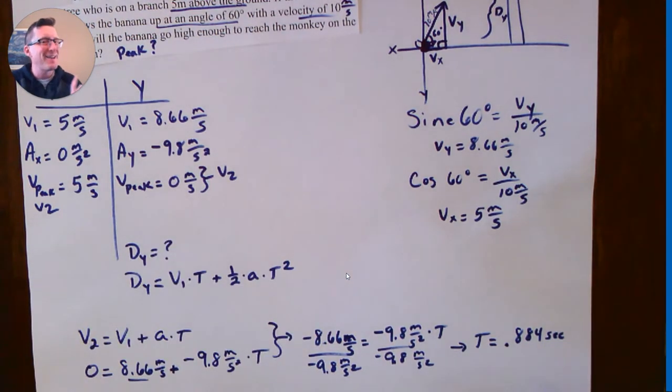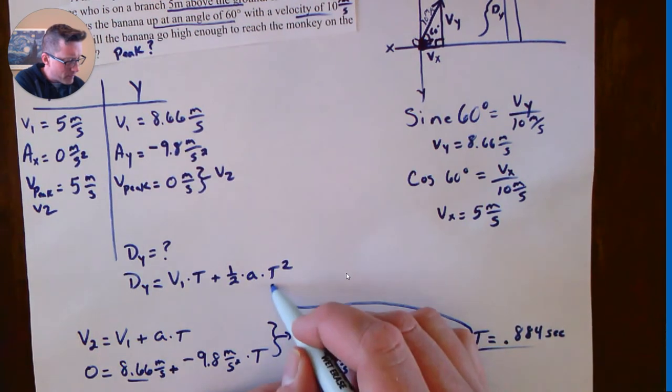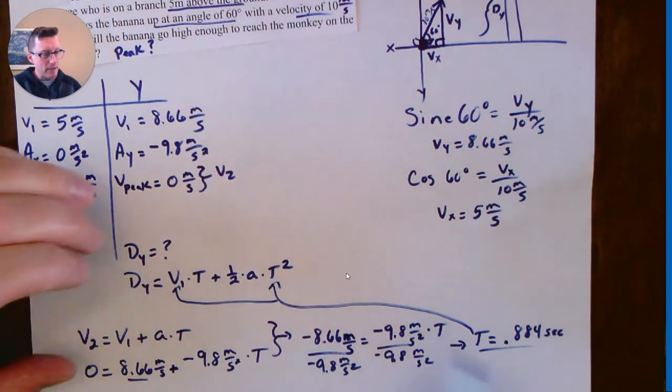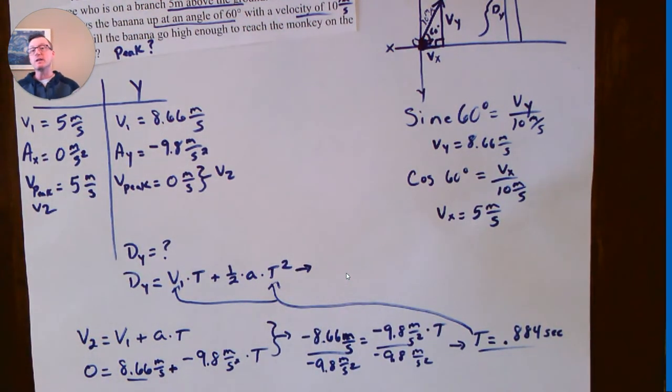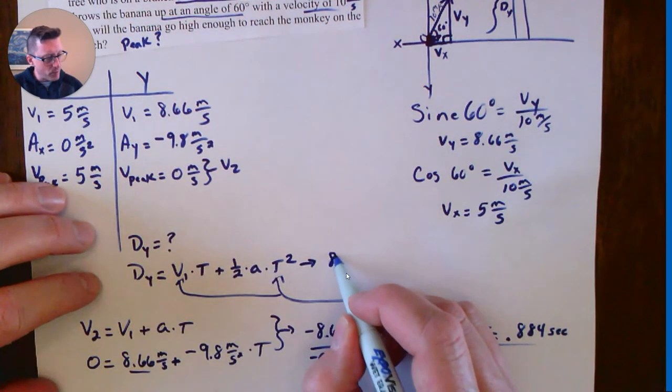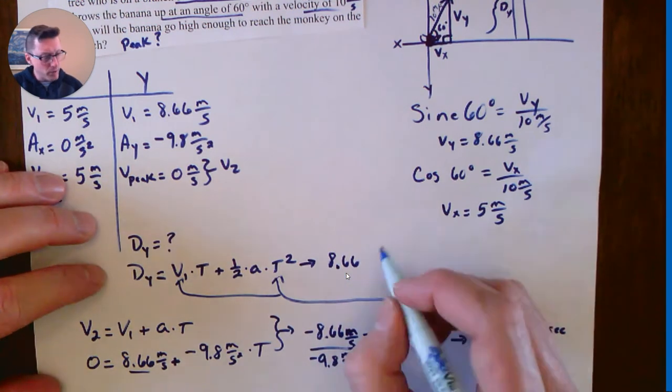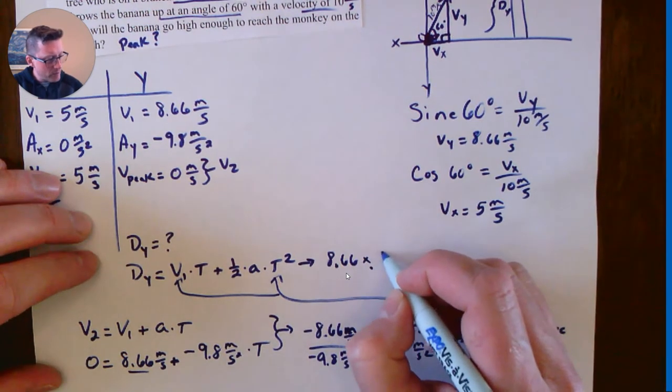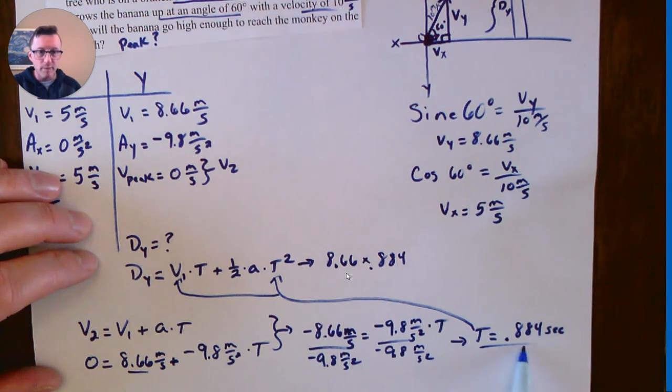Is that my final answer? No. That number, remember, is what we needed to figure out distance. Now I have enough numbers to solve for my distance equation in the y direction. So again, I start plugging my stuff in. V1 is 8.66. To make the numbers a little easier to see, I'm not going to put units. Times, I'm going to put a little time sign. 0.884 seconds. That's from my time here.